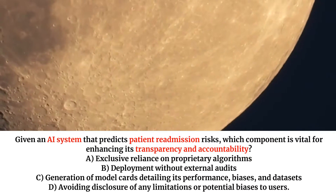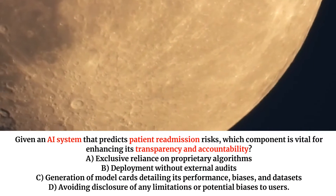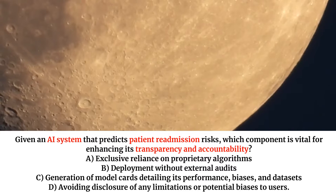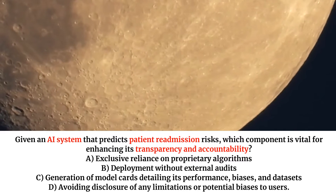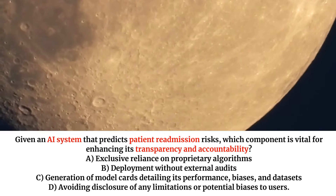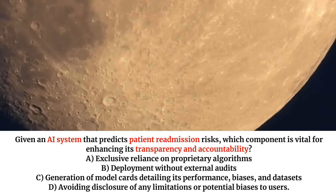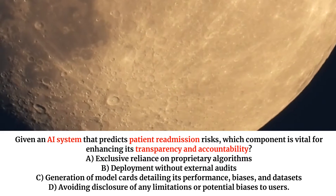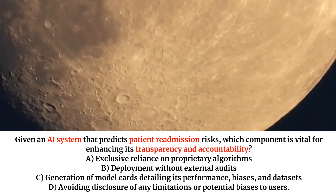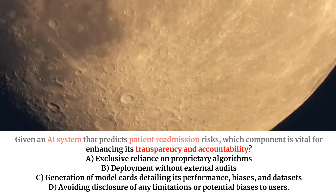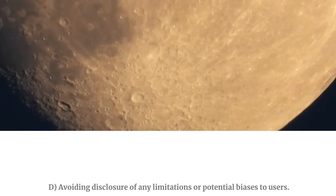Given an AI system that predicts patient readmission risks, which component is vital for enhancing its transparency and accountability? A. Exclusive reliance on proprietary algorithms. B. Deployment without external audits. C. Generation of model cards detailing its performance, biases, and datasets. D. Avoiding disclosure of any limitations or potential biases to users.